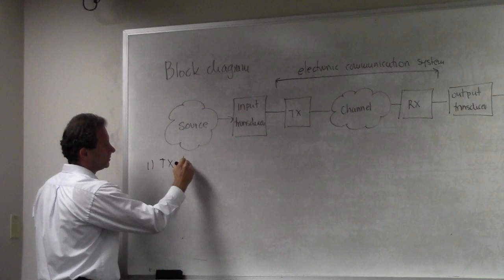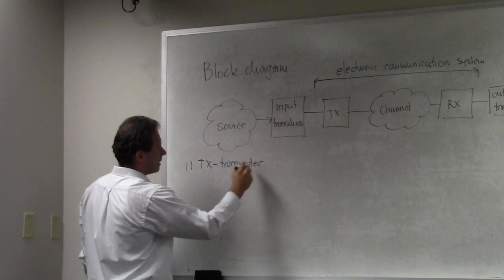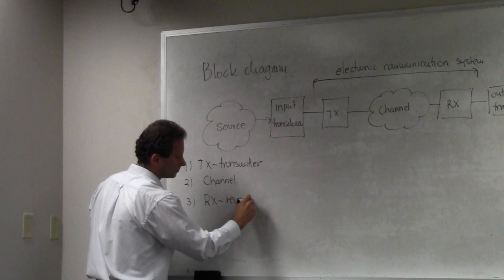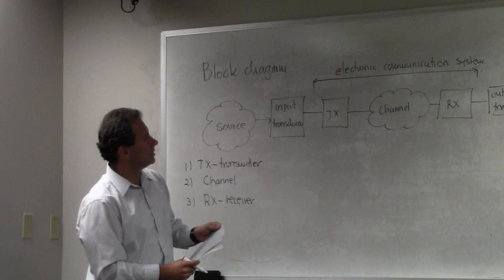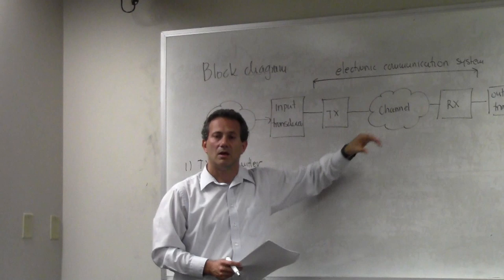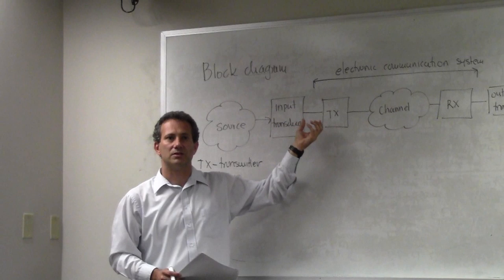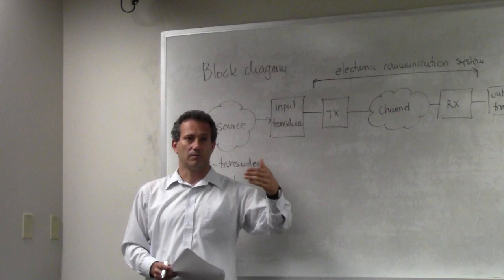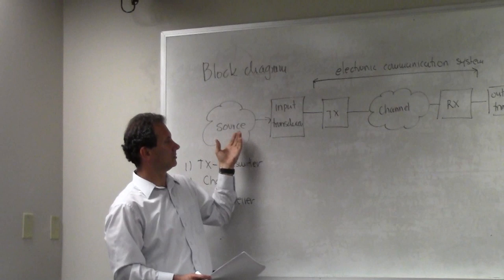TX stands for transmitter, the second is the channel, and the third is the receiver — RX. The transmitter converts signals into another set of signals suitable for transmission over a particular channel. What happens in communication systems is that signals coming from transducers almost always come in what we call baseband — they're low-pass, band-limited signals that are a direct electronic translation of the source waveforms. For example, if I speak, the microphone output is a speech signal. For those from communication theory: what's the bandwidth of a telephone speech signal? Four kilohertz — so it exists from zero to four kilohertz.